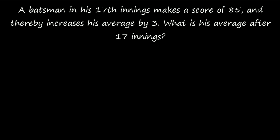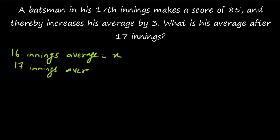A batsman in his 17th innings is making a score of 85 and thereby increasing his average by 3. After 16 innings, let his average be given by x. So after 16 innings his average is equal to x. Then after 17 innings, his average will be equal to x plus 3.